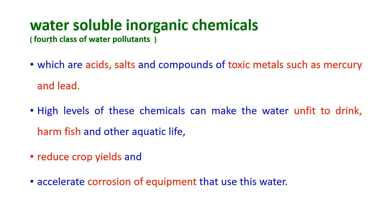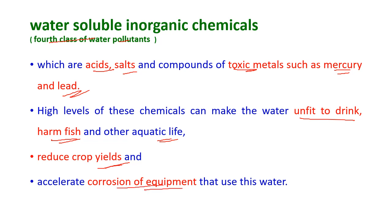The fourth class of water pollutants are water-soluble inorganic chemicals, which are acids, salts and compounds of toxic metals such as mercury and lead. High levels of these chemicals can make water unfit to drink, are harmful to fish and other aquatic life, reduce crop yields, and accelerate the corrosion of equipment that uses this kind of water.